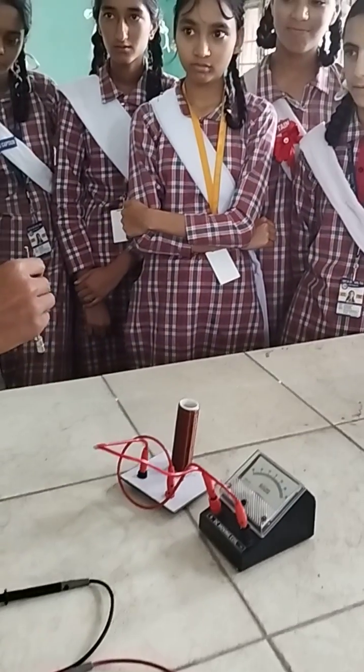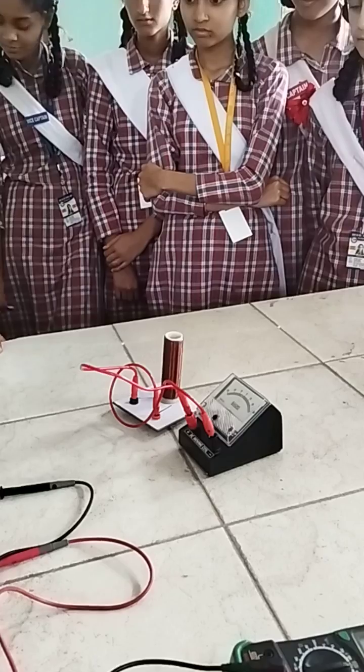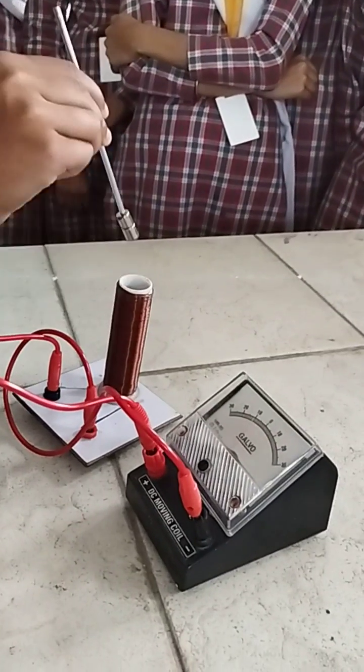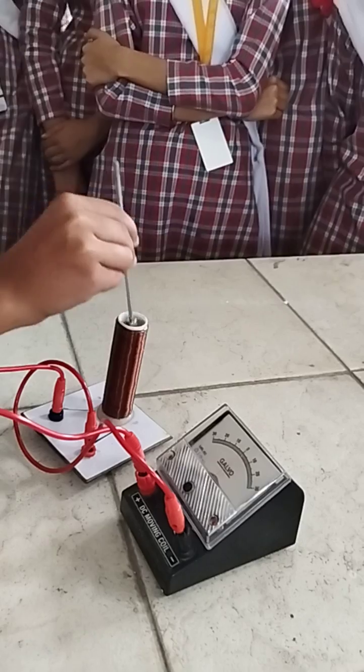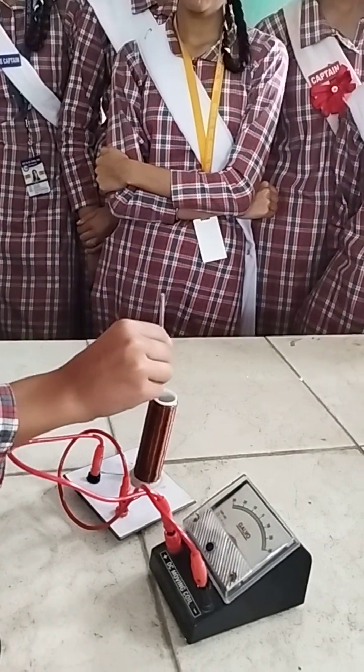Some other student may try. And now, Ritma, you try. If you move the magnet fast, what happens? When you move the magnet fast, that means the rate of change of flux is more. So you see more current there.